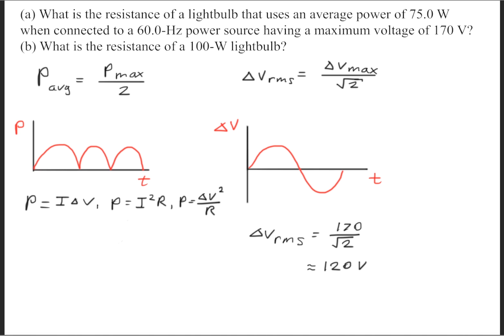The next thing to do is to use one of these power equations. There are three: we have I times delta V, we have I squared R, or we can use delta V squared over R.